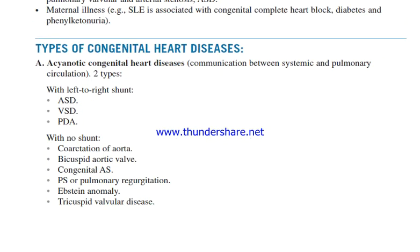Types of congenital heart disease. Acyanotic congenital heart disease involves communication between systemic and pulmonary circulation. It is of two types: with left-to-right shunt such as ASD, VSD, and PDA; and with no shunt, including coarctation of aorta, bicuspid aortic valve, congenital aortic stenosis, pulmonary stenosis or pulmonary regurgitation, Ebstein anomaly, and tricuspid valvular disease.